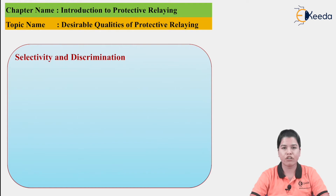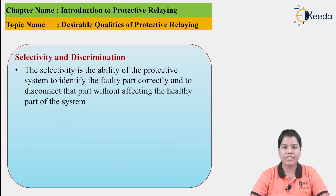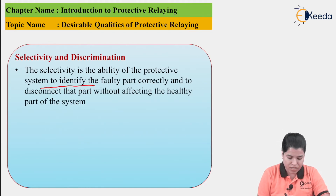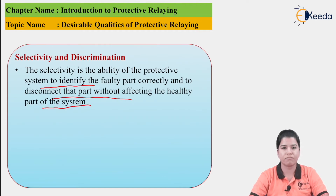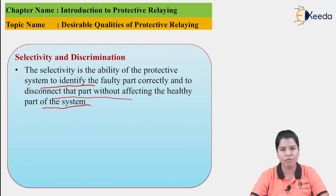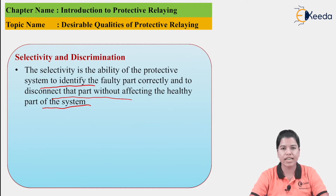The next desirable property is Selectivity and Discrimination. Selectivity is the ability of the protective system to identify the faulty part correctly and to disconnect that part without affecting the healthy part of the system. When a fault occurs, the power system should be able to select whether a part is faulty or healthy, and immediately disconnect the faulty part. This property is called selectivity.